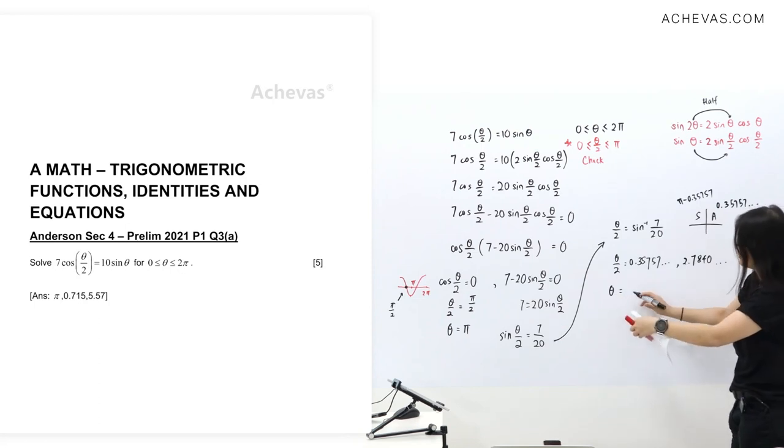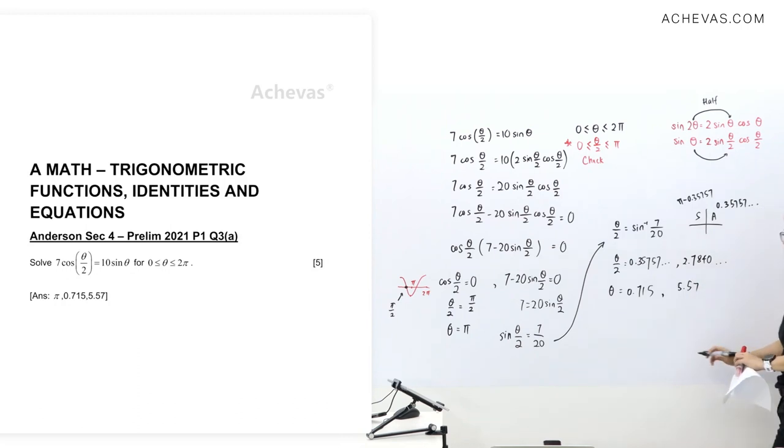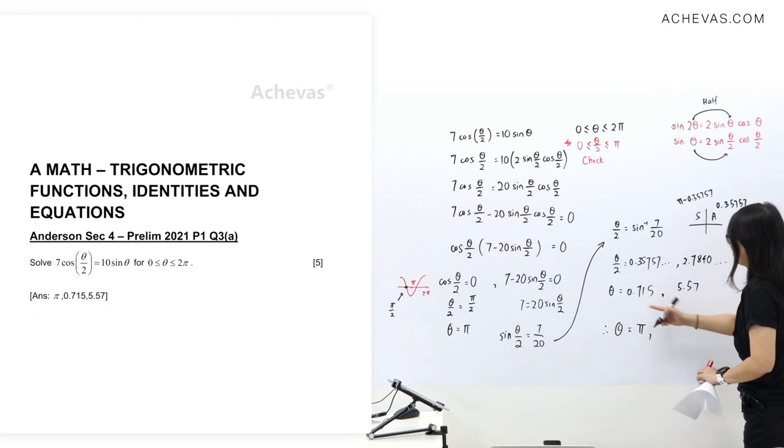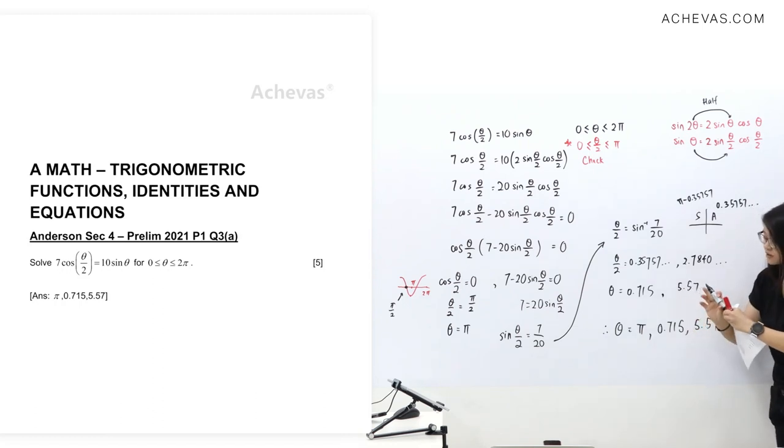Theta answer. Since you know this is last step, so this one can be in three significant figures. This one will be. So final answer will have pi, we'll have this one, and we'll have this one.